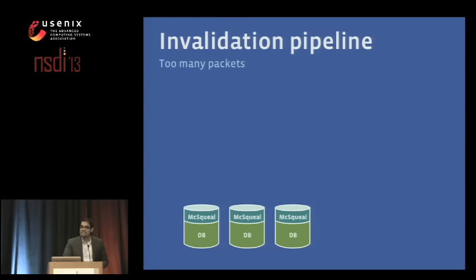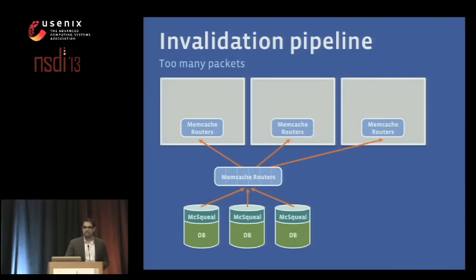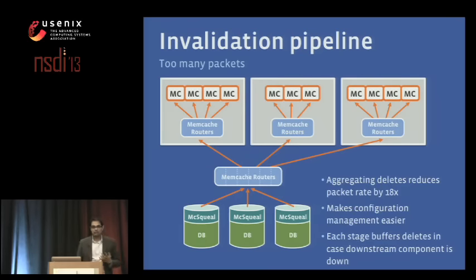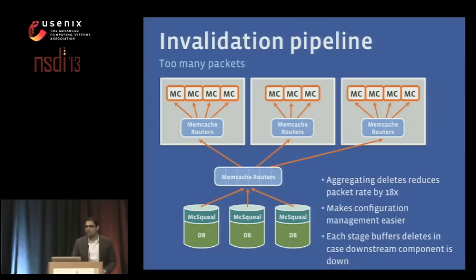So we take database instances with McSqueal and route them to a layer of memcache routers — McRouter. These fan the deletes out into different front-end clusters; each front-end cluster has its own set of McRouters that broadcast them further. One significant advantage is that inter-cluster bandwidth is much smaller than intra-cluster bandwidth. By doing this, we minimize bandwidth usage and maximize packet density — we see about an 18x reduction in packet count. This also makes configuration management much easier: you only need to know what memcache servers are downstream from you. And each stage can buffer its deletes in case of downstream component failure.